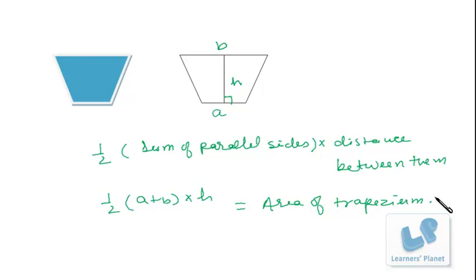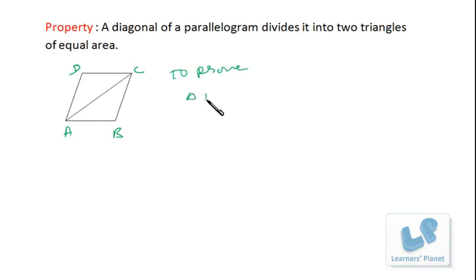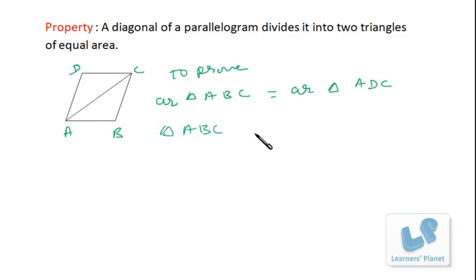So we have discussed the basic formulae of various shapes. Now let's start doing some problems and theorems. First of all, let's discuss this simple property: a diagonal of a parallelogram divides it into two triangles of equal area — that we have to establish. Suppose this is a parallelogram ABCD and this is the diagonal AC. We have to prove that the two triangles are of equal area, that means to prove area of triangle ABC is equal to area of triangle ACD. It's very simple to prove this — I just compare these two triangles, triangle ABC and triangle ACD. If I prove them to be congruent, then we can easily say that the areas of the two congruent triangles will be the same.